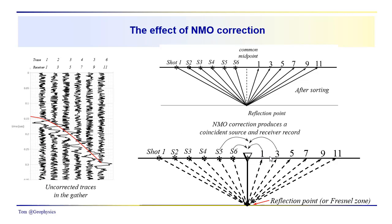The effect of NMO correction is to take an individual source-receiver combination and move them over to the midpoint. You can see source 6, trace 1, receiver 1, source 5, corresponding receiver record 3, are getting moved over to this common midpoint.